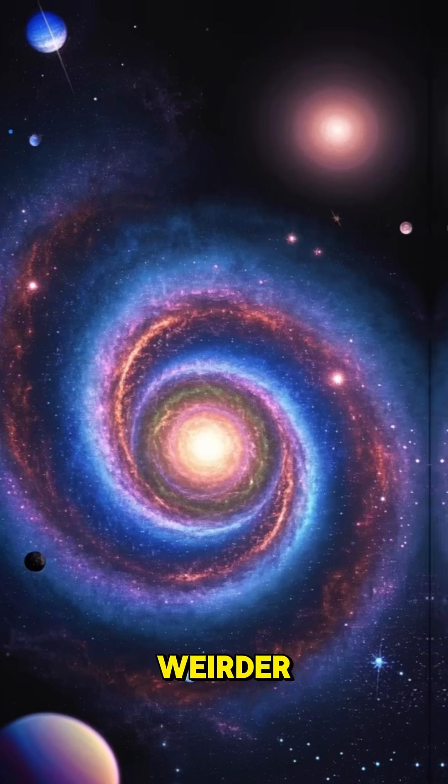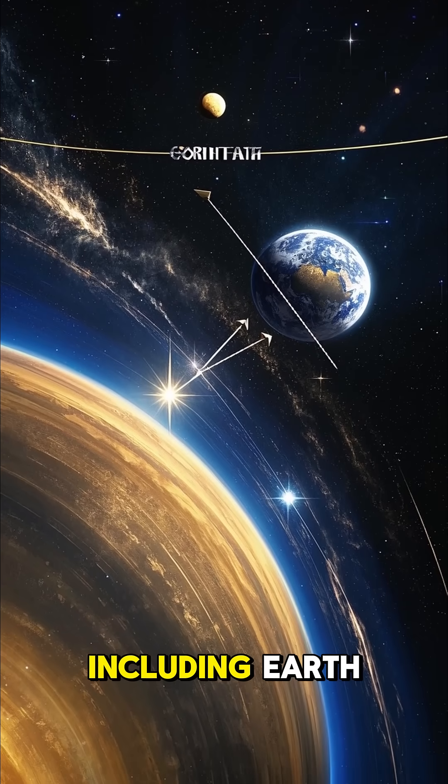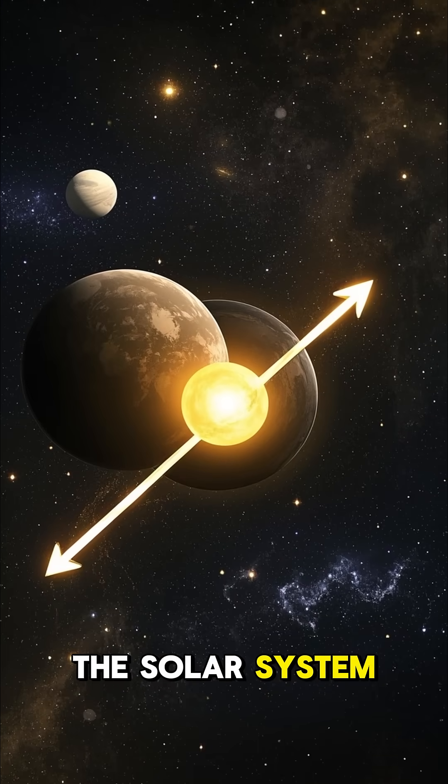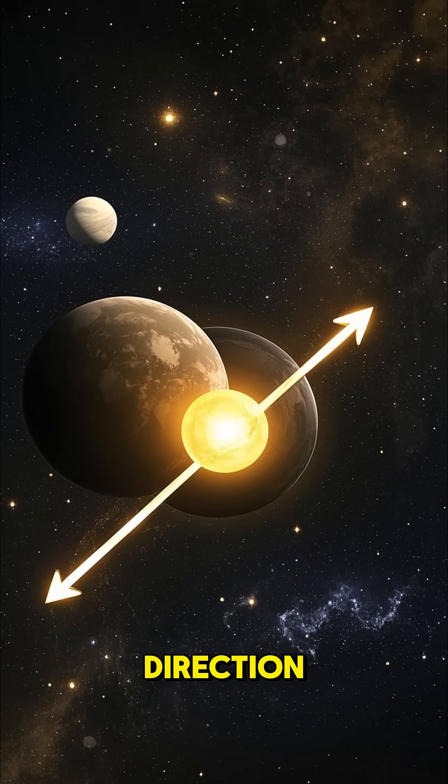But it gets weirder. Venus also rotates in the opposite direction to most planets, including Earth. Most planets in the solar system rotate on their axes with the same speed and in the same direction.